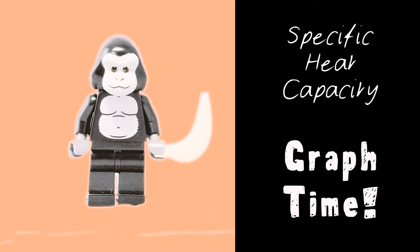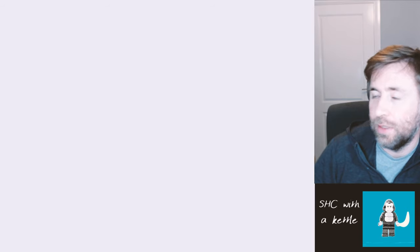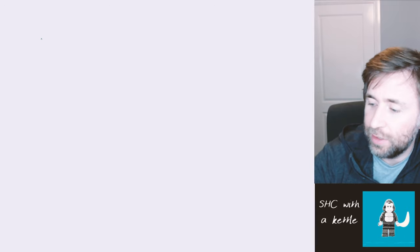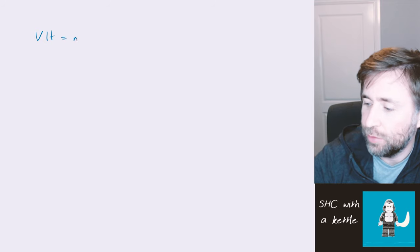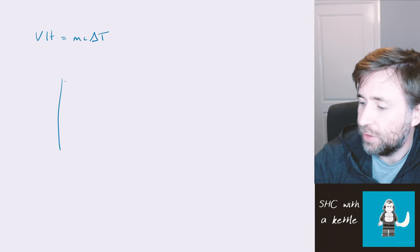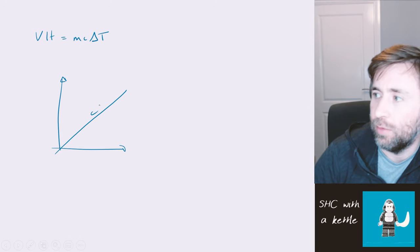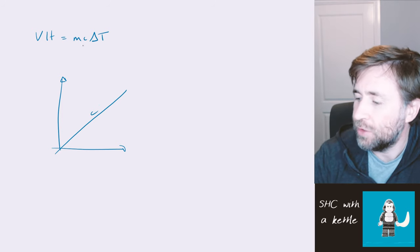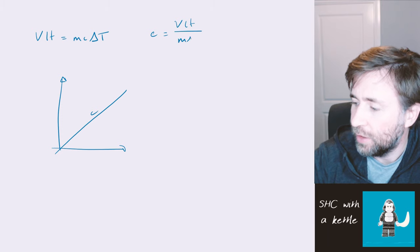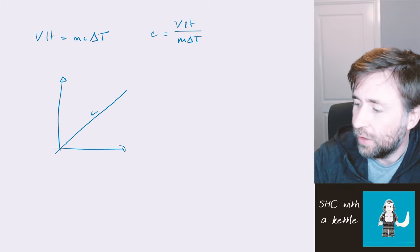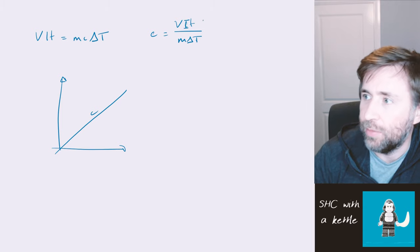So how do those results translate onto a graph? We have the idea that we're taking VIT, that's the electrical store, and we are making that equal to, transferring that into the thermal store MC delta T. And we want to plot a graph such that we're going to get a gradient equal to the specific heat capacity. Let's rearrange this for C. I'm going to leave VIT where it is and divide both sides by M delta T, and I get C equals VIT over M delta T.